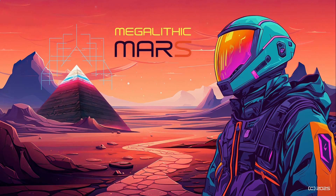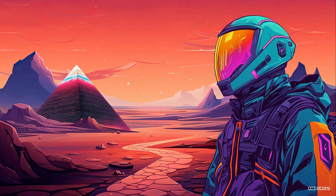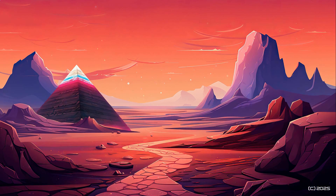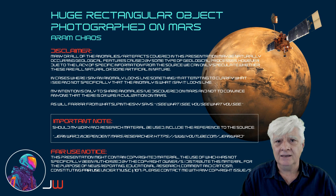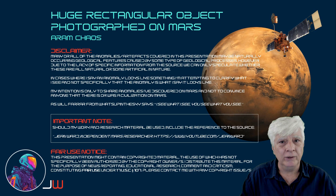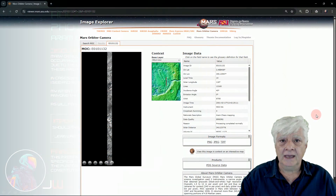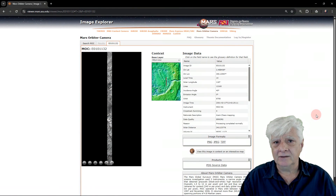Welcome to Megalithic Mars, the ongoing study of megalithic structures and anomalous objects discovered on Mars. Hello everybody, Jean here with another Mars anomaly. I spotted this one at a site in Aram Chaos. Let's have a look at the original NASA page and I'll show you an upscale of this weird rectangular object. I'll include the link to the original source in the video description.